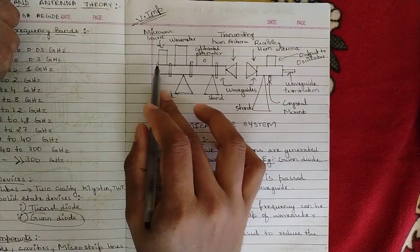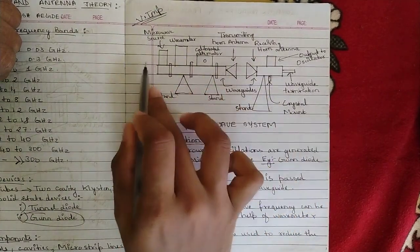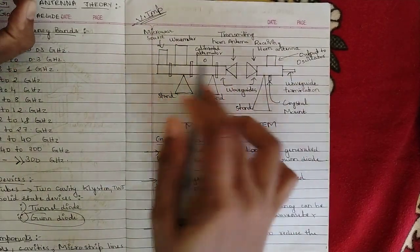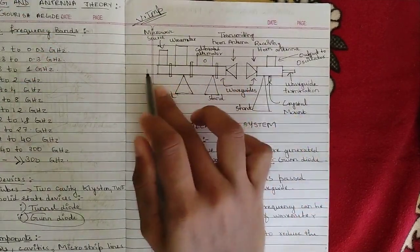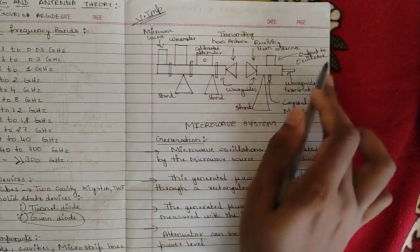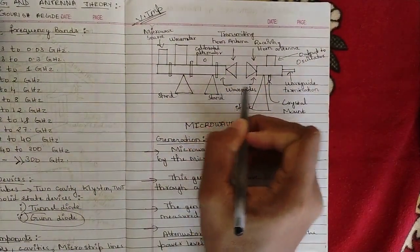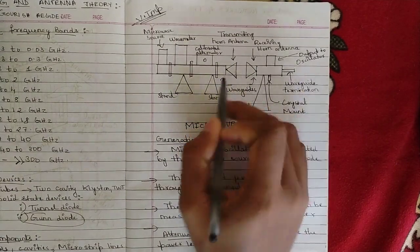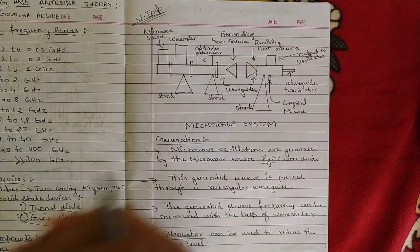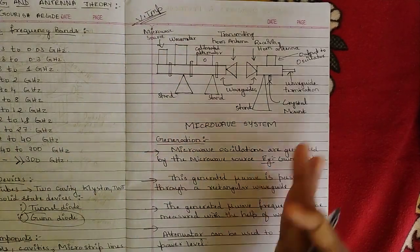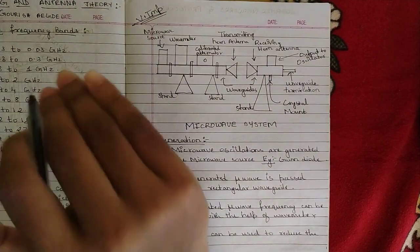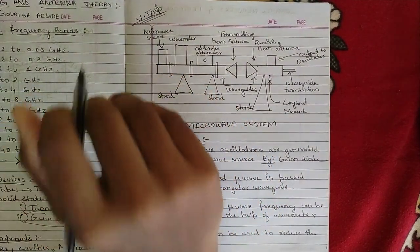Here is the microwave system diagram. It consists of a microwave source, which is passed through a cavity — called the wave propagation cavity — where all the waves are transmitted. These waves are then passed through a transmitting horn antenna, which collects the waves and sends them toward the receiving horn antenna. Rectangular waveguides connect components on both the transmitter and receiver sides to ensure smooth wave propagation. An attenuator blocks unwanted signals and allows only the required signals to pass.